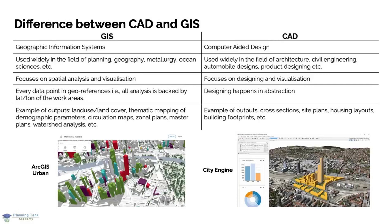Examples of GIS outputs include land use/land cover analysis, thematic mapping of demographic parameters, circulation maps, zonal plans, master plans, and watershed analysis. Examples of CAD outputs include cross-sections, site plans, housing layouts, and building footprints. New-edge technologies have also explored larger possibilities of interconnection of GIS and CAD for visualization.